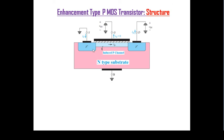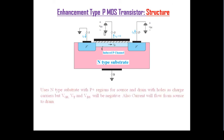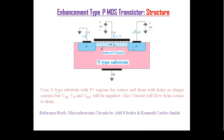For the enhancement-type PMOS transistor, we use an N-type substrate with P+ source and drain regions, where holes are the charge carriers. The gate-to-source voltage should be negative, and the threshold voltage for PMOS is also negative. In NMOS, we use a P-type substrate with electrons as the charge carriers, and current flows from source to drain.